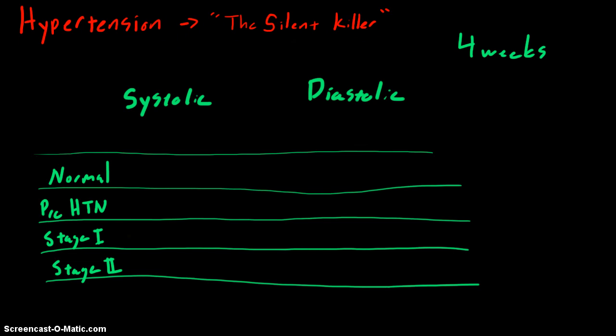A few other notes: when you take a person's blood pressure, you need to make sure that they're seated and that they've rested for five minutes. Because many things can increase a person's blood pressure — the sheer stress of coming to the doctor's office could increase the blood pressure. So having them seated and rested for five minutes will give you a more accurate reading.